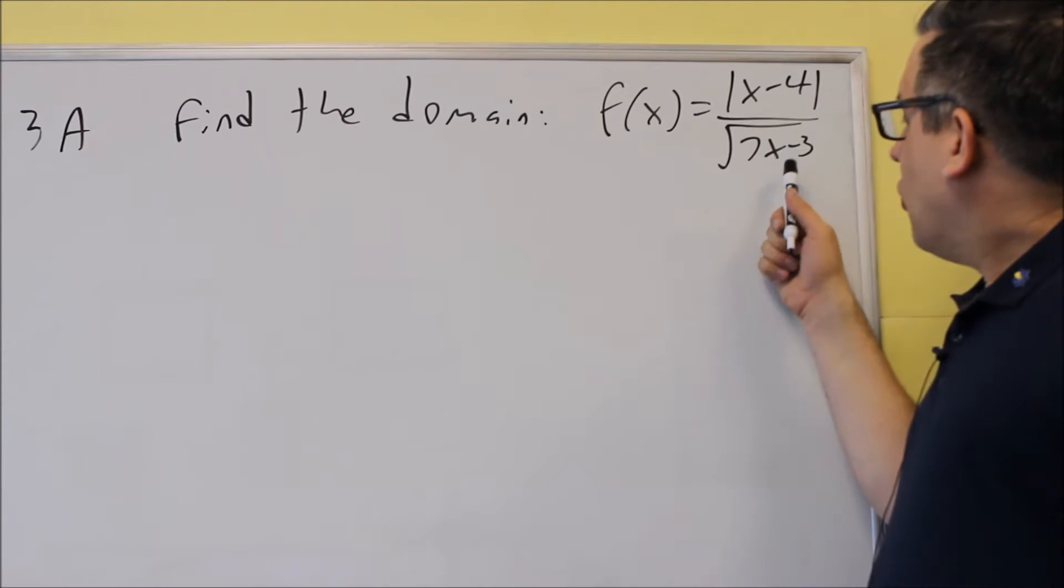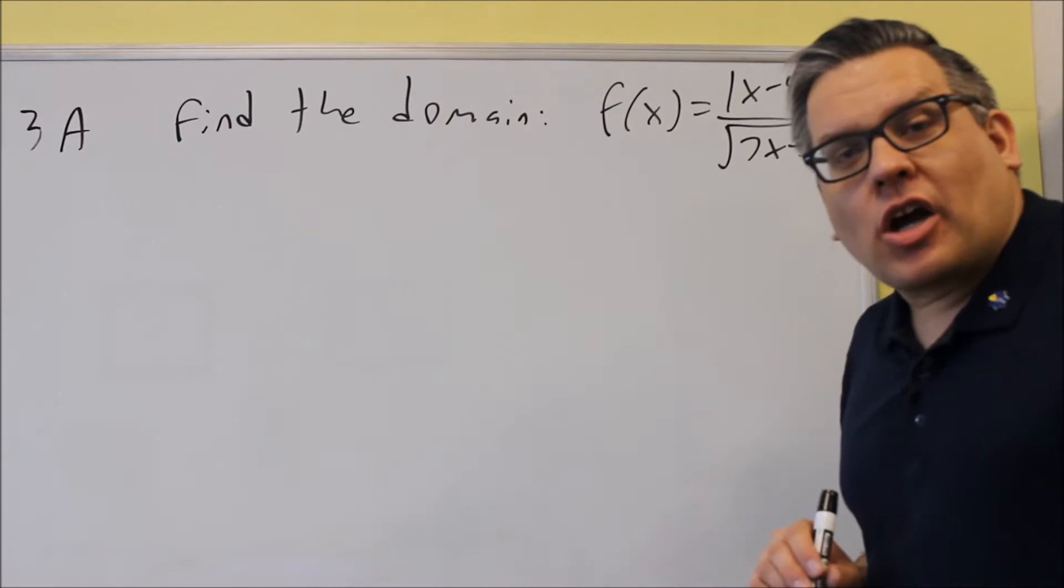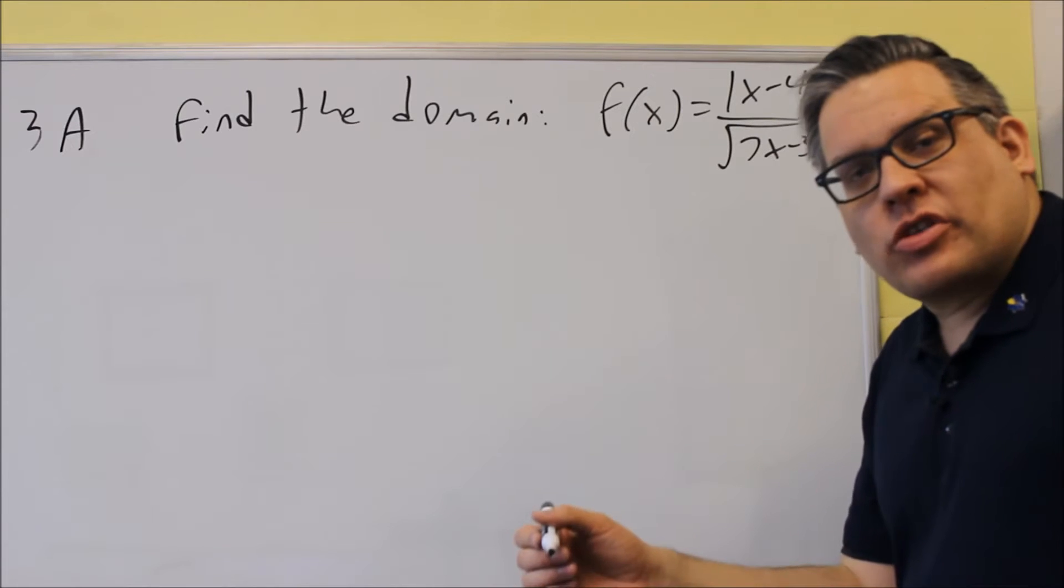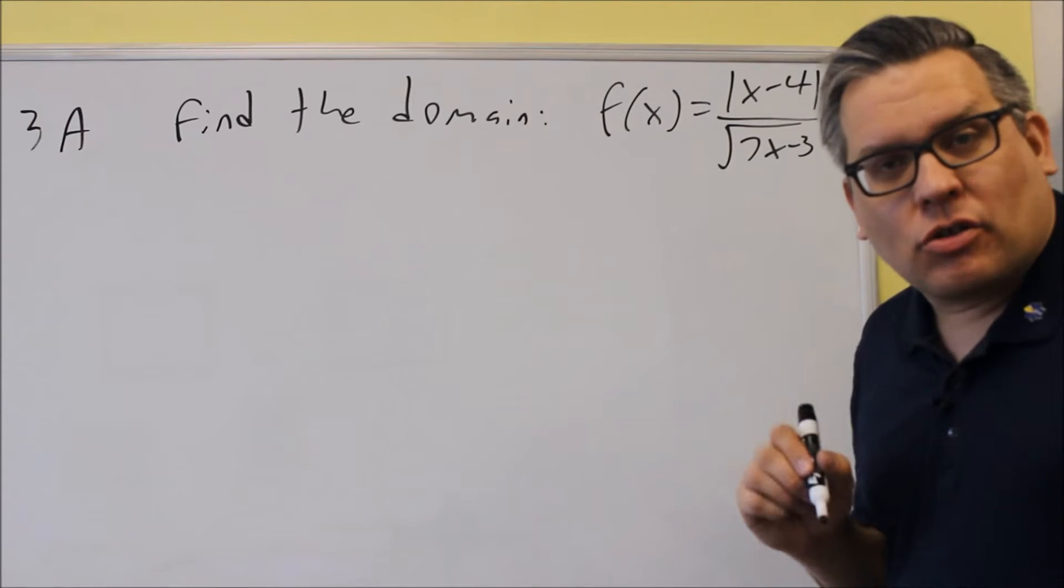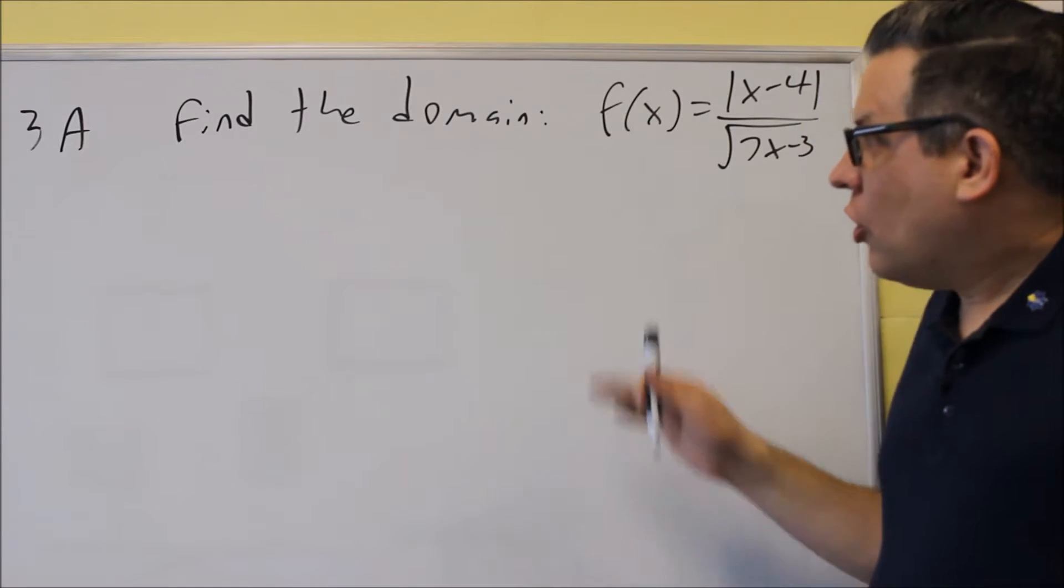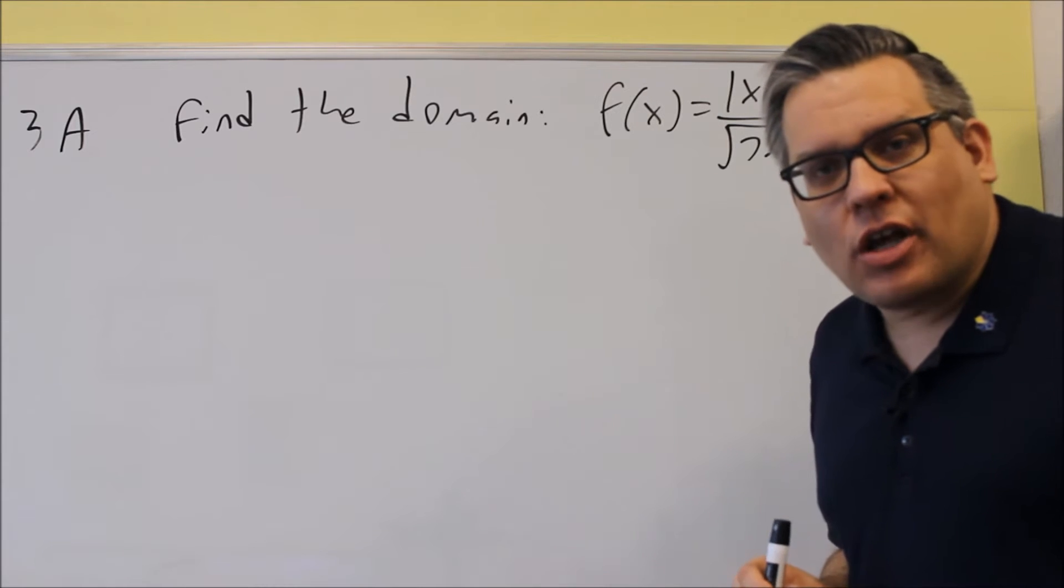For A, we have a square root that's in the denominator. Remember, domain is talking about all the numbers that make a function defined. In other words, all numbers that don't end up in division by zero or square root of a negative number. So we want to make sure we put in what numbers are allowed where I will not get an error on my calculator.